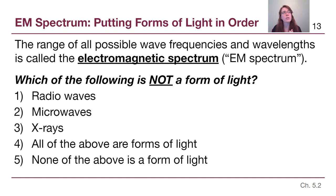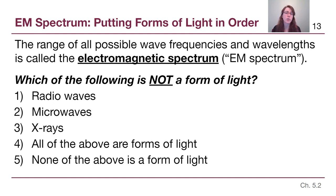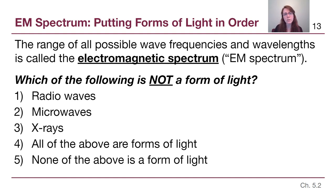If light has all these different possible wavelengths, frequencies, and energies, we'd want to categorize them so we can talk about different ranges. The range of all possible wave frequencies and wavelengths, put in order, is called the electromagnetic spectrum — you can write it as EM spectrum. Before we go into all the different types of light, consider which of the following is not a form of light in the electromagnetic spectrum.